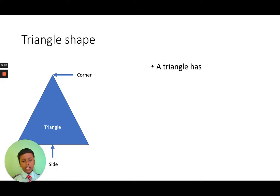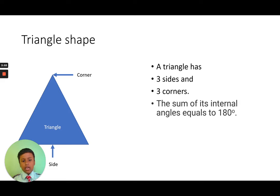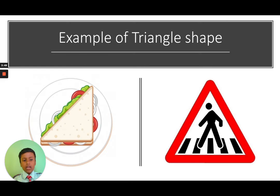Triangle shape: A triangle has three sides and three corners. The sum of its internal angles equals 180 degrees. Examples of triangle shapes include sandwiches and road signs.